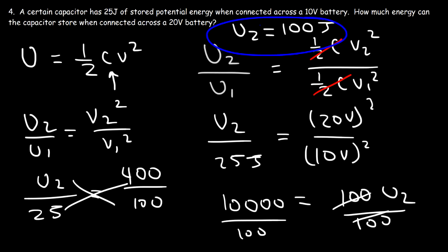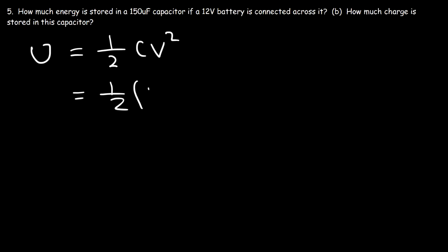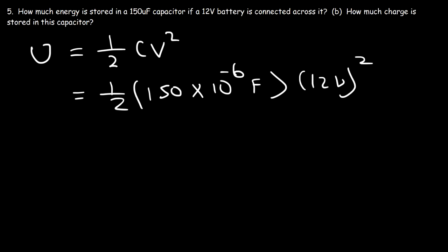Now for the last problem: how much energy is stored in a 150 microfarad capacitor if a 12 volt battery is connected across it? Most capacitors don't have a rating of 1 farad or 10 farads — most are in the microfarad or nanofarad range. Using one-half CV squared, the capacitance is 150 times 10 to the minus 6 farads and the voltage is 12 volts, giving a very small amount of potential energy.